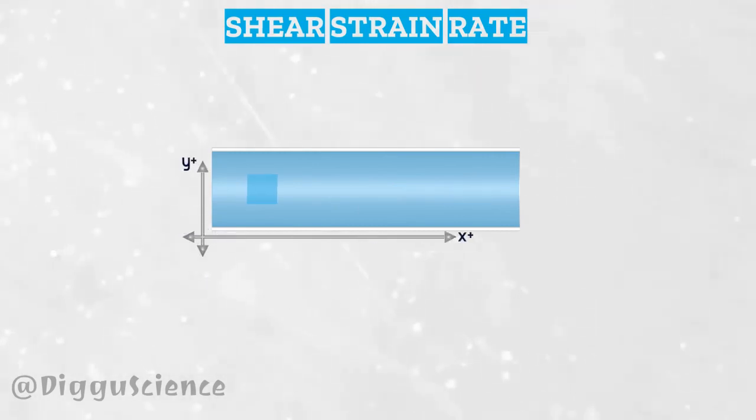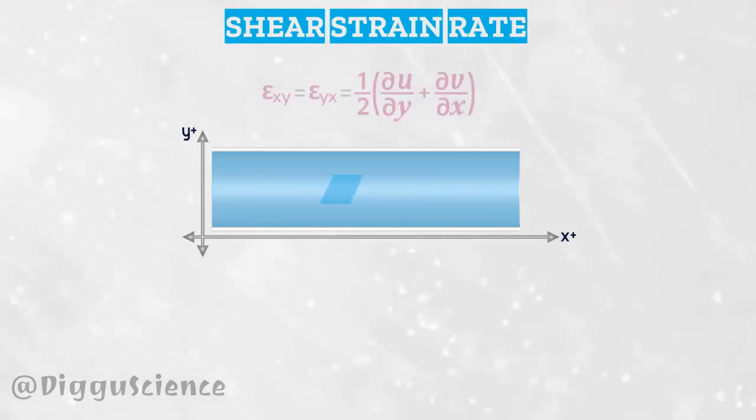If the horizontal line is the x-axis and the vertical line is the y-axis, using the differential concept, the shear strain rate can be calculated through the equation: epsilon of x, y is equal to half of the partial of u with respect to y plus the partial of v with respect to x.